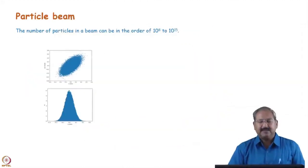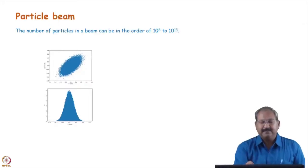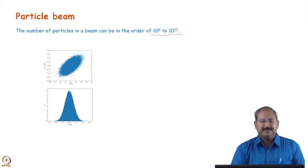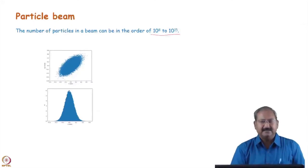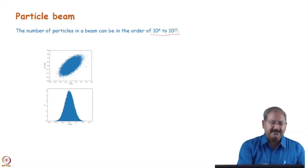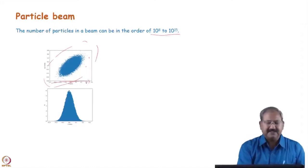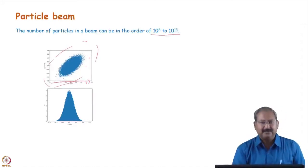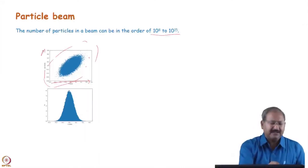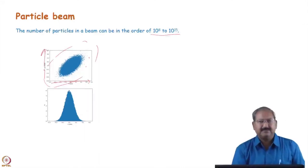There are many different trajectories for different particles. The beam may be a very complicated collection of different x and different θ for each individual particle, with particle counts as high as 10⁸ to 10⁵⁰. If we plot the distance of each particle from the design axis on the x-axis and the angle of its trajectory on the y-axis, we get a phase-space distribution.